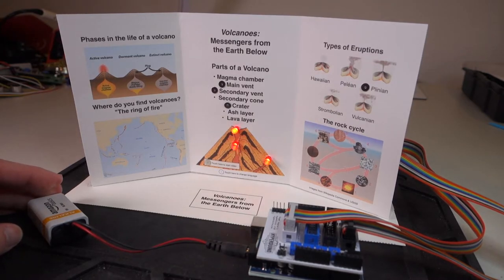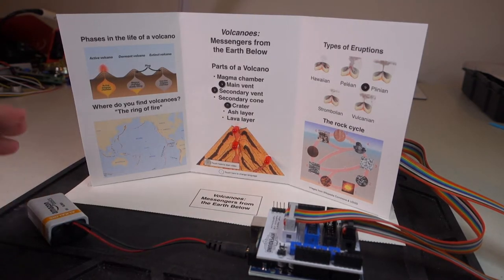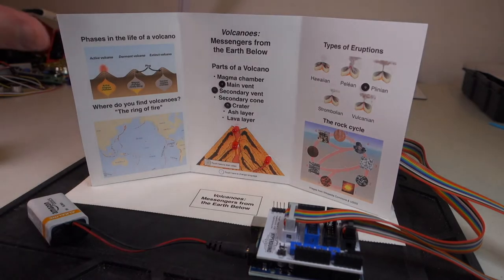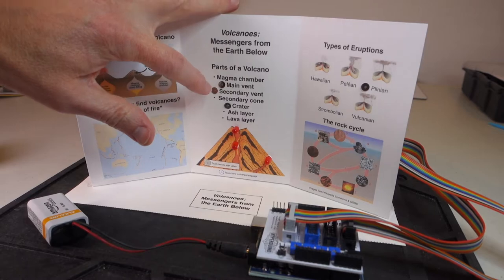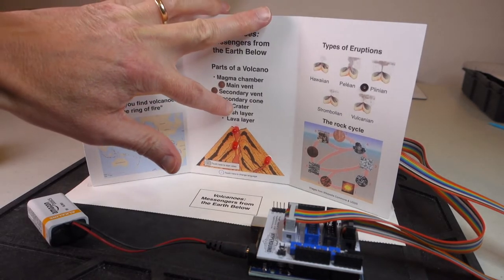When we do that, the lights will blink indicating that everything is working normally. And now when I click on the touch points, the various parts of the model should light up. For example, the main vent, the secondary vent, and the crater.